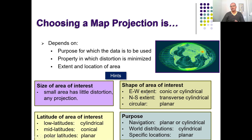Depending on the orientation of your area: if it is east-west you can use conical or cylindrical projection; if it is north-south you can rotate the cylinder and use the transverse form. If the area is circular, rectangular, or square, you can use a planar projection for that particular place. And depending on the purpose — whether you want to maintain direction, area, or shape — you choose accordingly. The key factors for choosing a map projection are: size of area, latitude of area of interest, shape of area of interest, and the purpose.